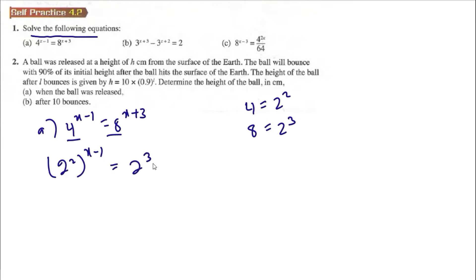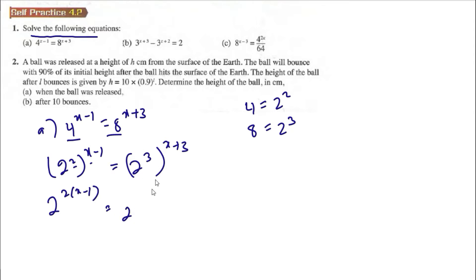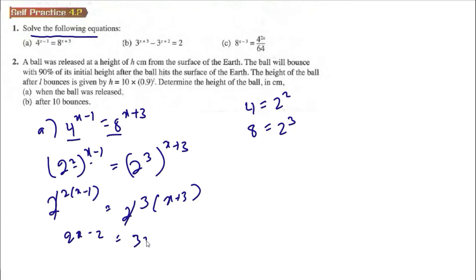So 2(x-1) means 2x minus 2, and 3(x+3) means 3x plus 9. When we have the same base we can remove the base, so we have 2x minus 2 is equal to 3x plus 9.